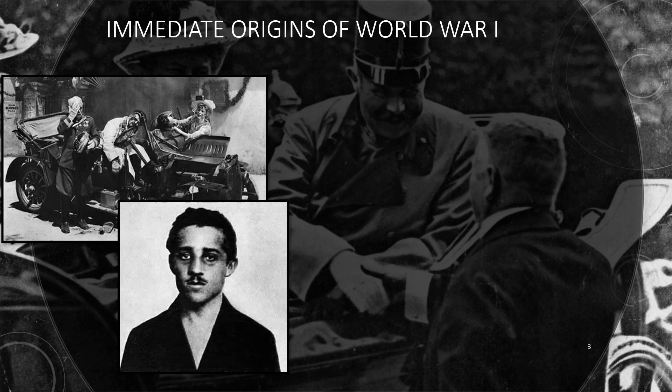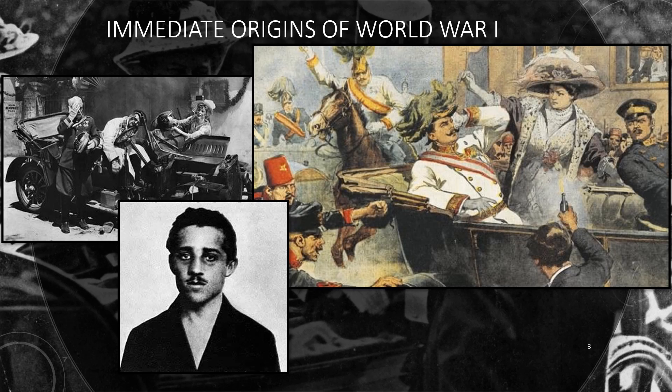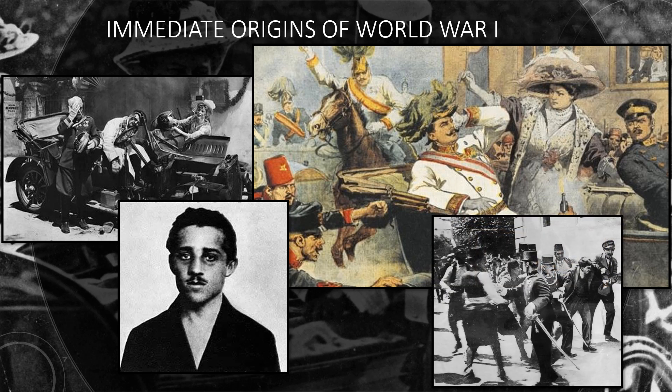One of them, Gavrilo Princip, walked down Franz Joseph Street. At that very moment, Franz Ferdinand was leaving the town hall to visit the men hospitalized from the grenade blast. His chauffeur, a stranger to Sarajevo, got lost. He swung onto Franz Joseph Street, then drifted to a stop. Princip looked up to find his target sitting just a few feet away. He pulled his gun. Two shots rang out. The first killed Franz Ferdinand's wife, Sophie. The second hit the Archduke in the neck, severing his jugular vein. The Archduke slumped back, mortally wounded.